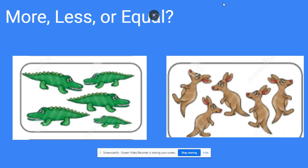Now, let's look at these groups. And what you need to tell me, are there more alligators, less alligators, or are there the same amount of alligators as there are kangaroos? And you have to decide that by counting the alligators and then counting the kangaroos. So I want to know, are there more alligators than kangaroos? Are there less alligators? Or are there the same amount? And the answer is equal, because there are five alligators and there are five kangaroos.